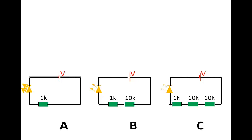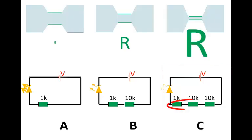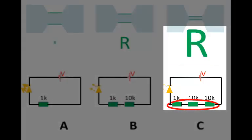We found that the LED shone the brightest in circuit A and the dimmest in circuit C. Why is that? That's because many resistors in series has a higher resistance.